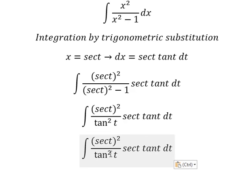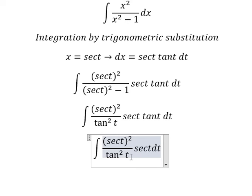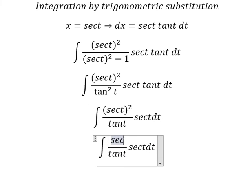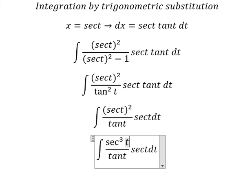We simplify tangent t and tangent t. So this one, we get secant t to the power of 3, if we multiply secant t with secant squared t.